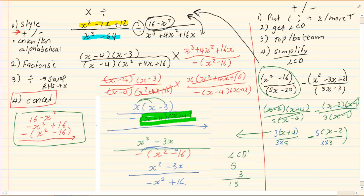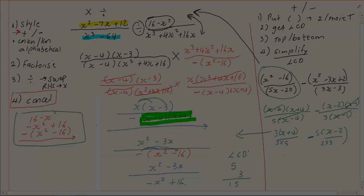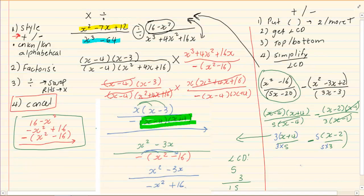Now, once we multiply the top with what is at the bottom and the bottom with what is at the top, we are going to rewrite it over 1 LCD.